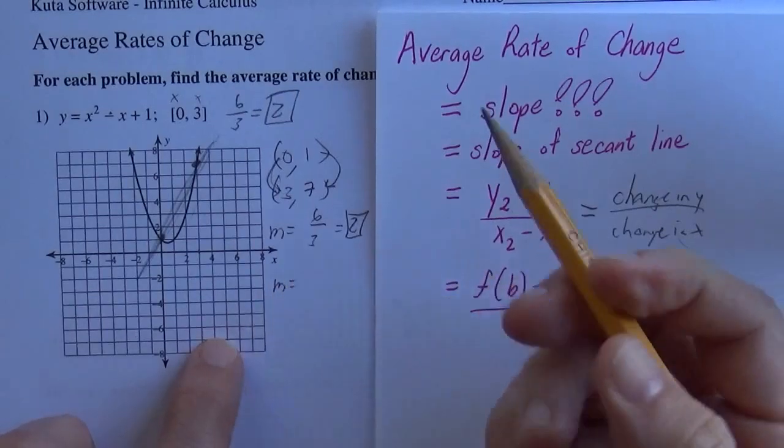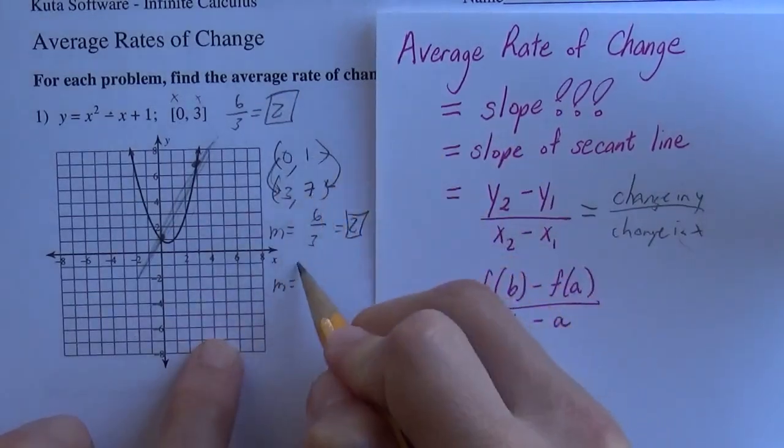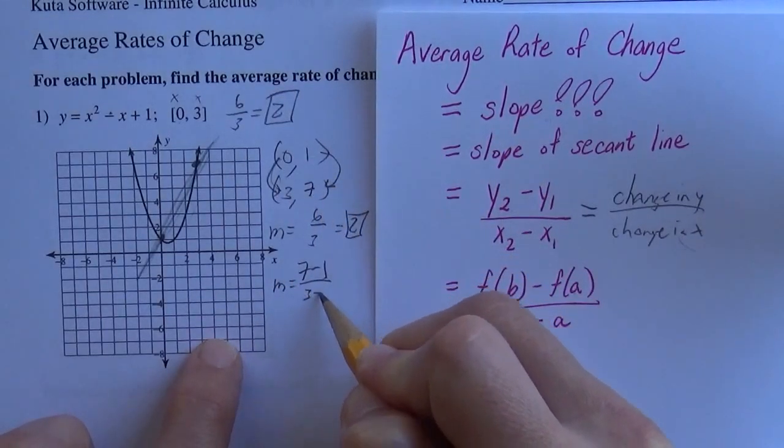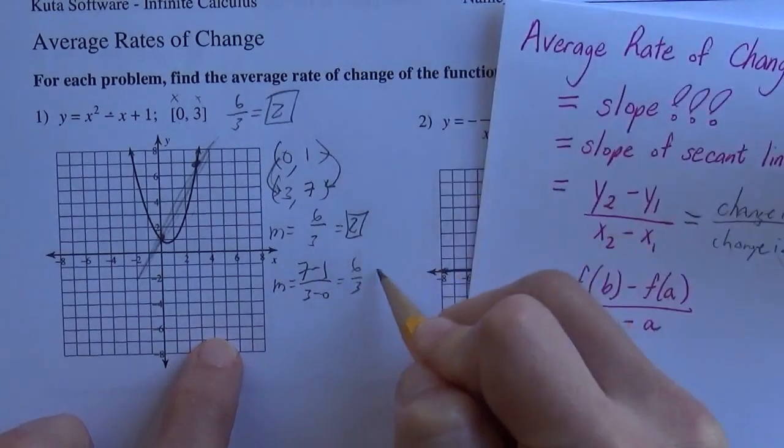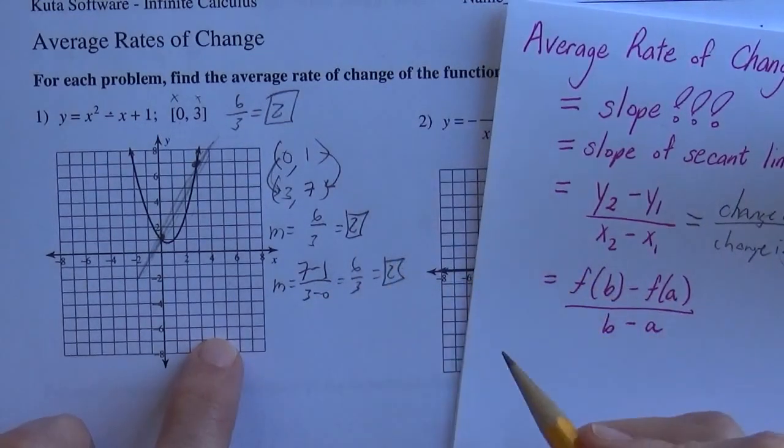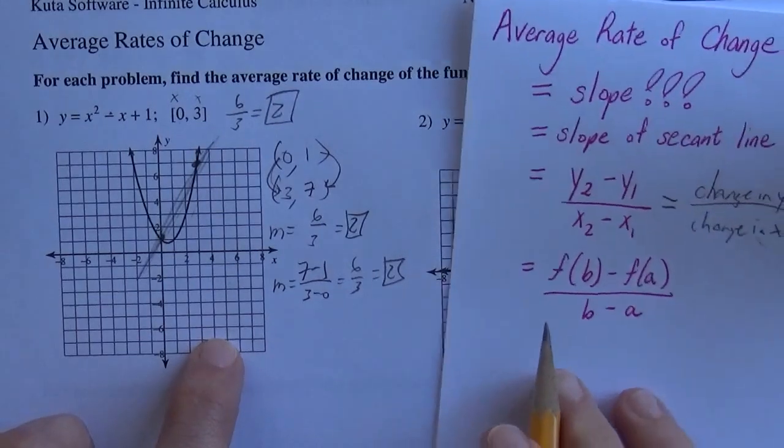You could also, once you have those ordered pairs, do the formula y2 minus y1 over x2 minus x1 is 6 over 3 is 2.